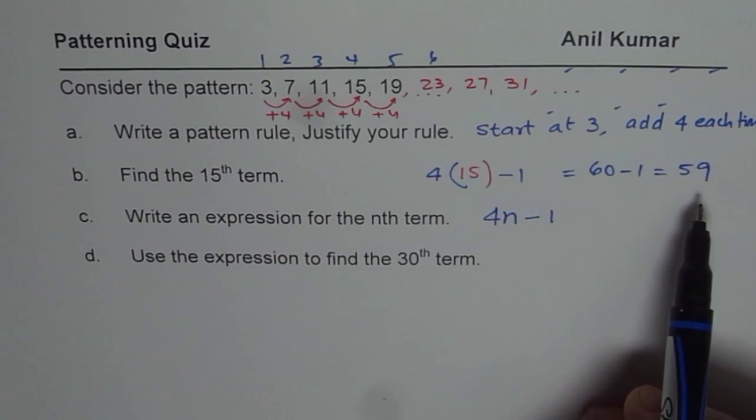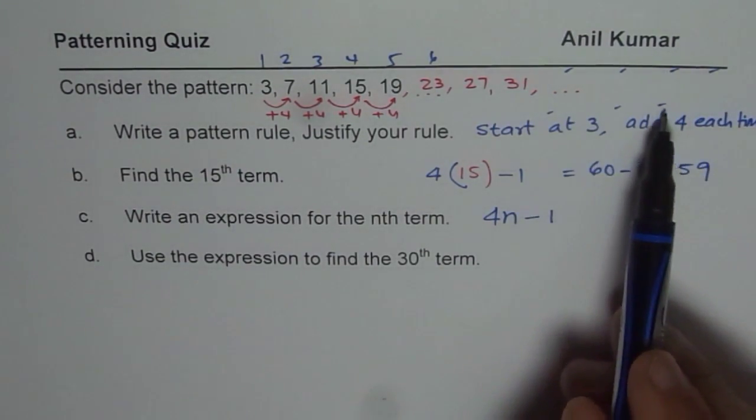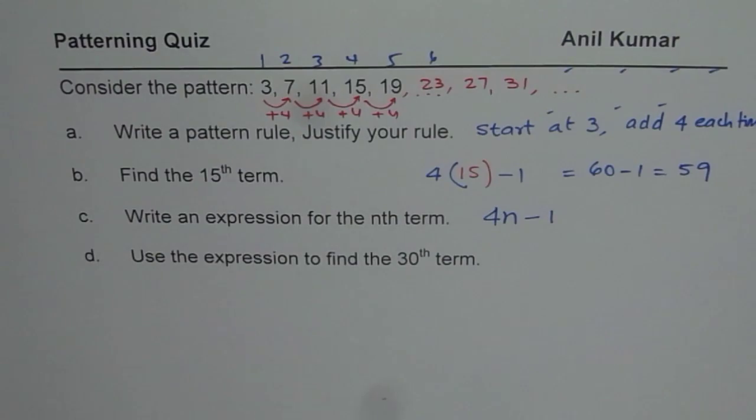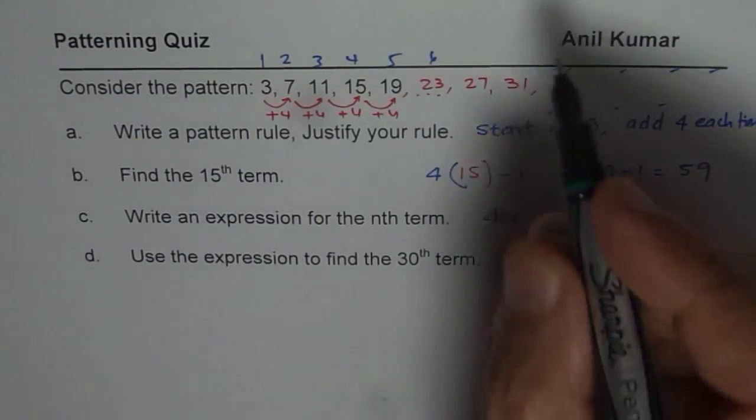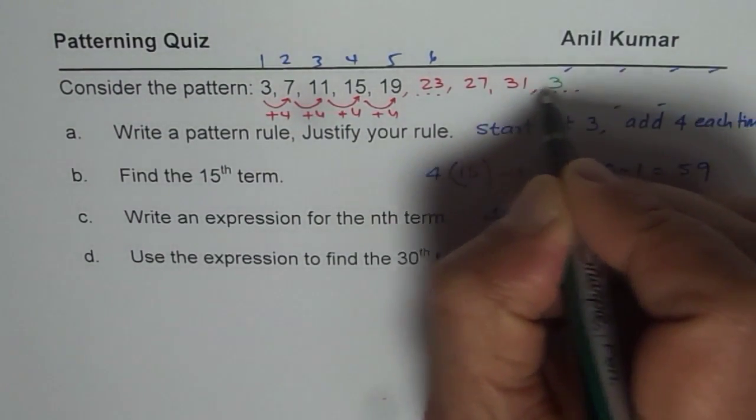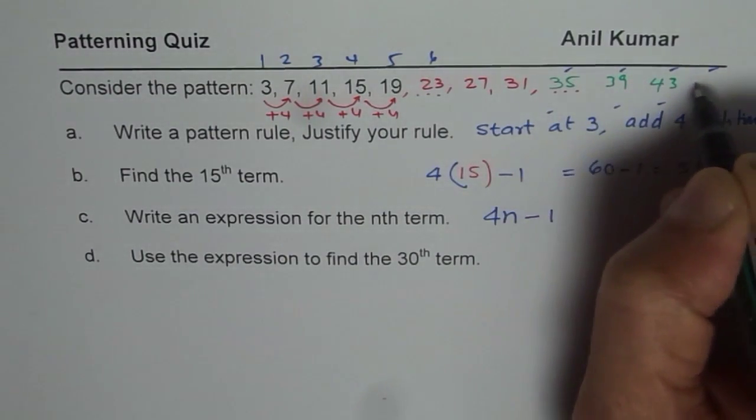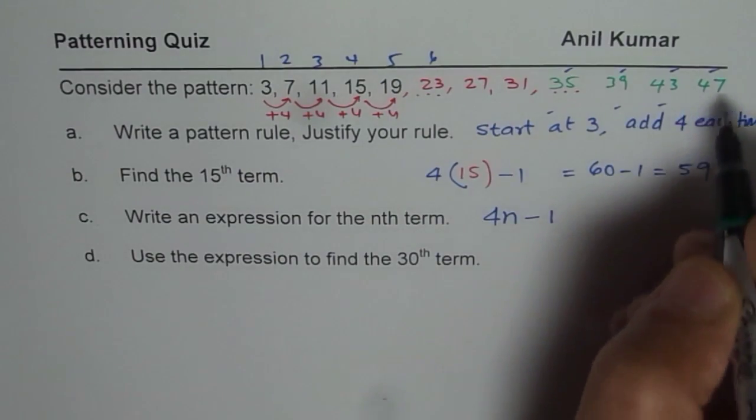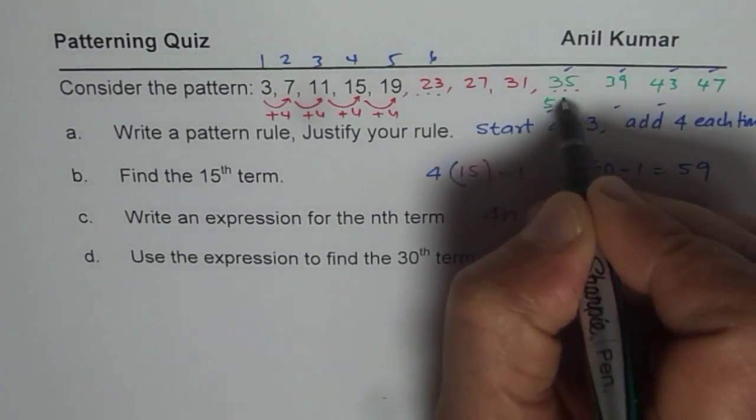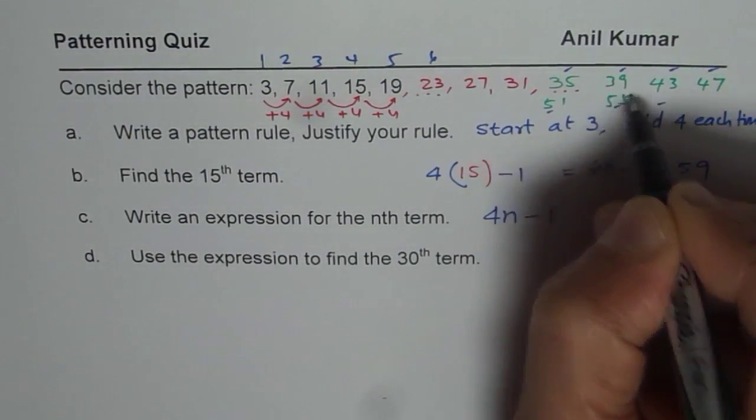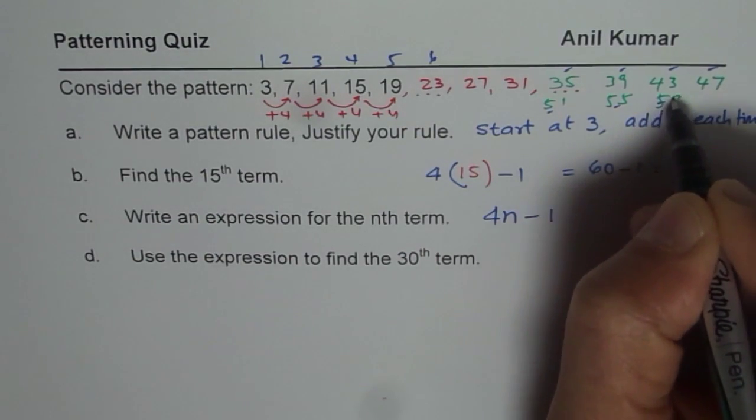What you can do is, you can extend, keep on adding 4 and see if you get 59 there. So, that will be a check. So, 30 plus 35, 39, 43, 47 and plus 4, 51, plus 4, 55, plus 4, 59. Yes, you do get 15th term as 59.